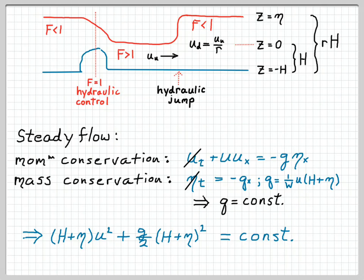Because the flow is steady, nothing's changing in time, momentum conservation just becomes u ux equals minus g eta x, and mass conservation just becomes q equals constant. So u times h plus eta is some constant. By combining those two conservation statements in this flow geometry, we arrived at the fact that this quantity is constant as we cross the hydraulic jump.